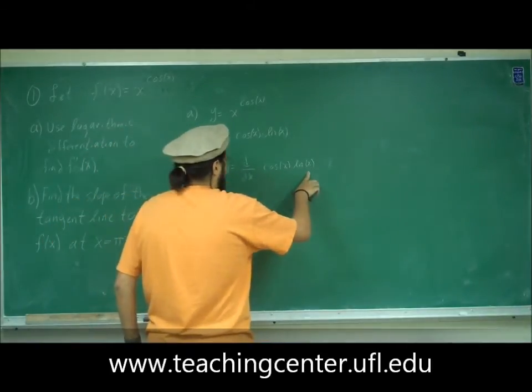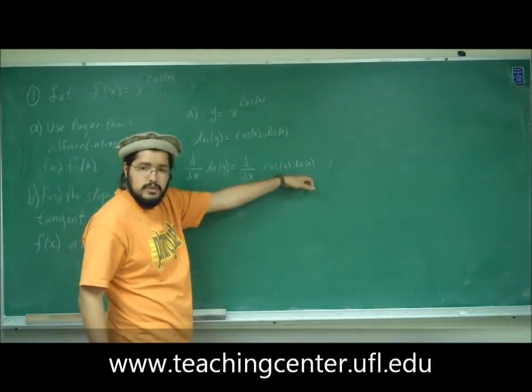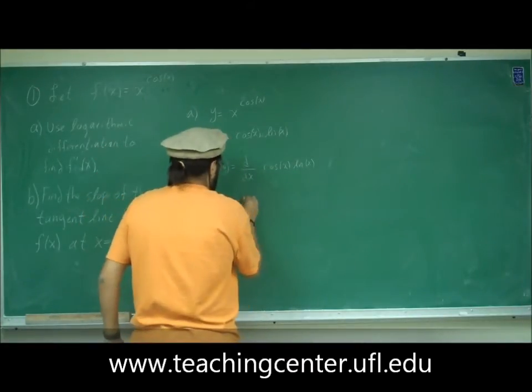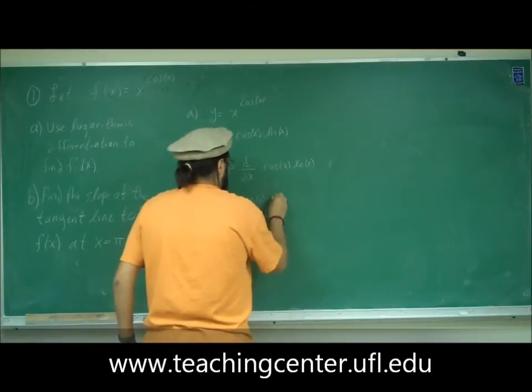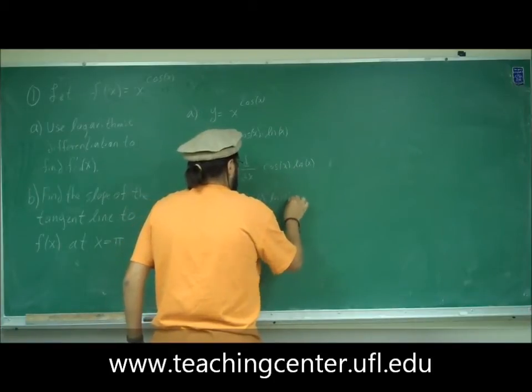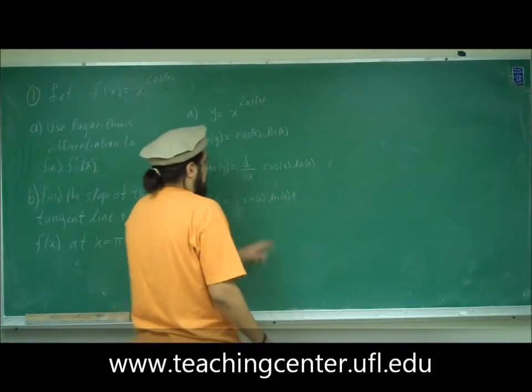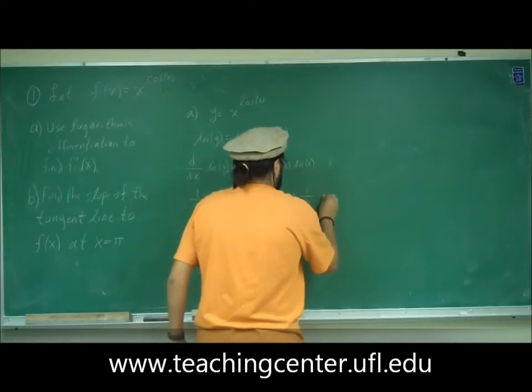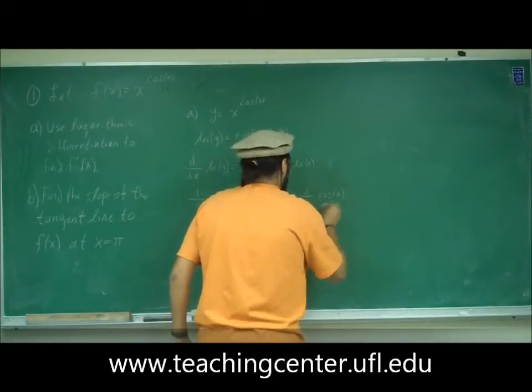Here we've got to use the product rule since we have a function times another function. The derivative of cosine is minus sine x times ln of x, plus the derivative of ln of x which is 1 over x times cosine of x.